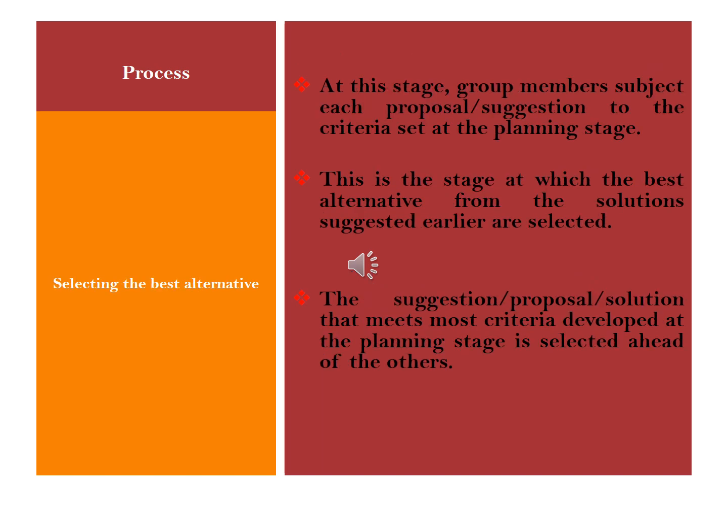Once different alternatives have been generated and discussed, the decision making process moves to the next stage called selection of best alternatives. At this stage, group members subject each proposal or suggestion to the criteria set at the planning stage. The best alternative from the solutions suggested earlier is selected, and the proposal that meets most criteria developed at the planning stage is selected ahead of the others.